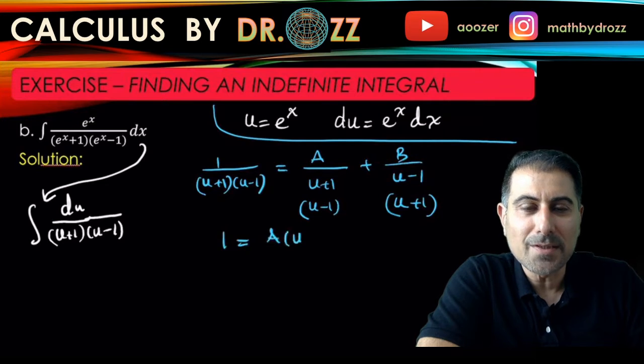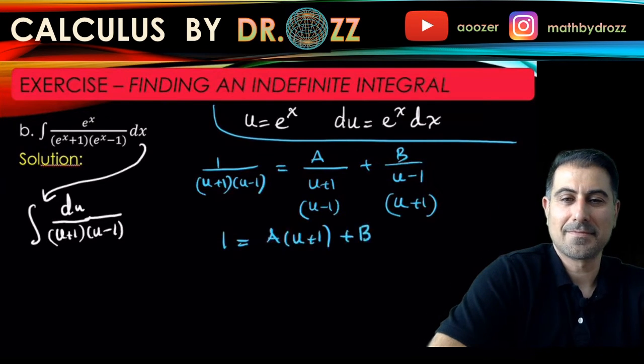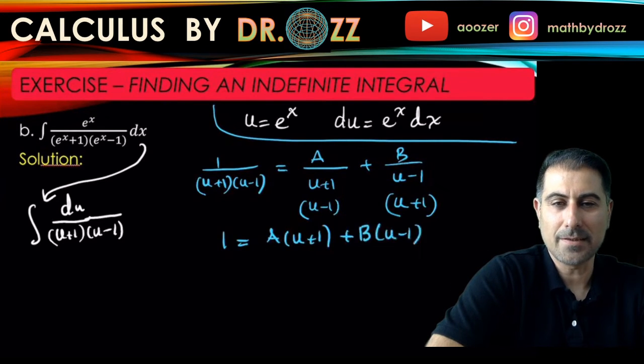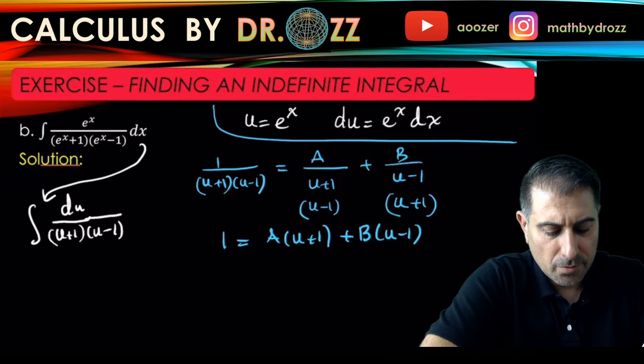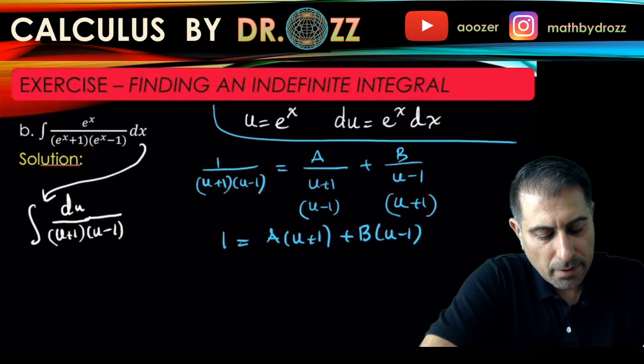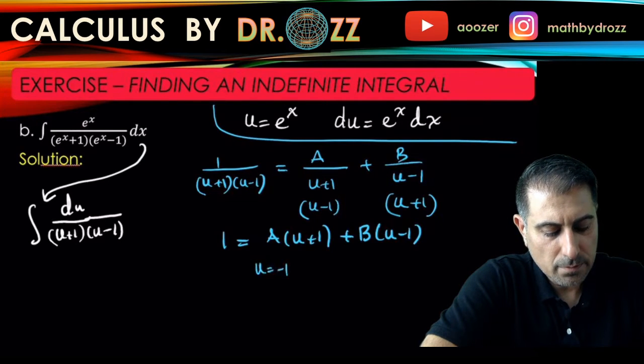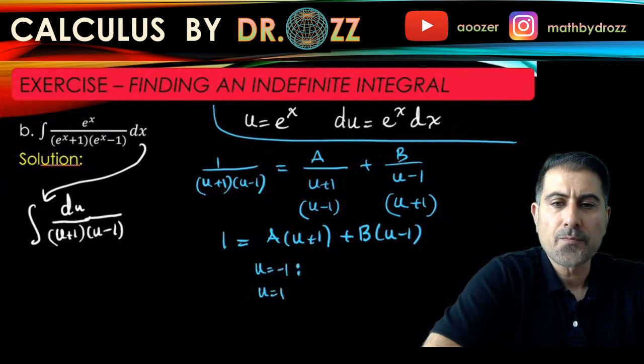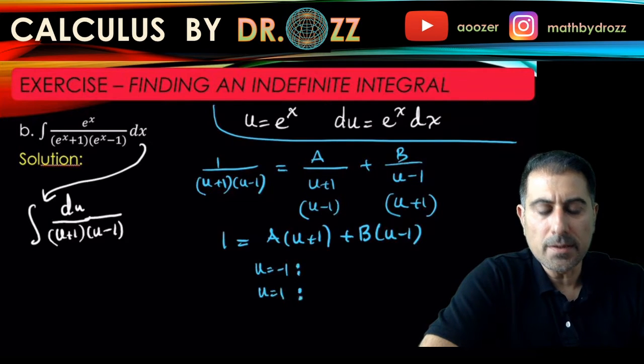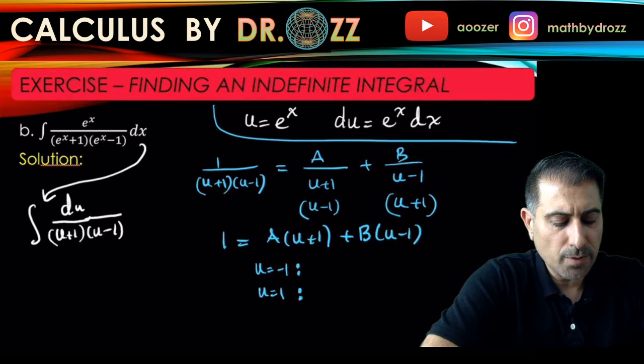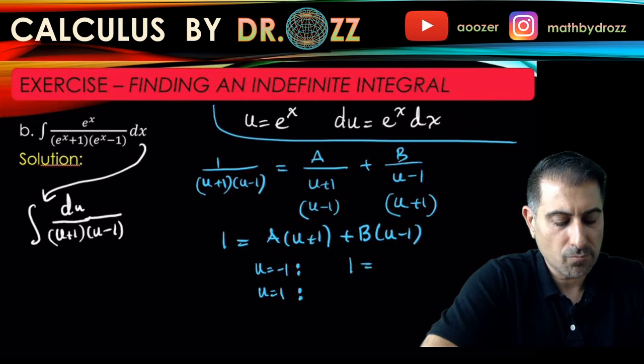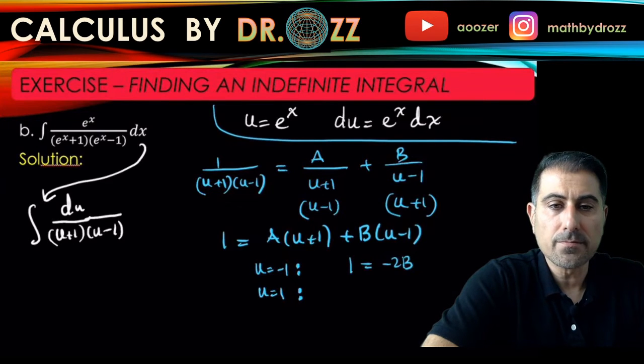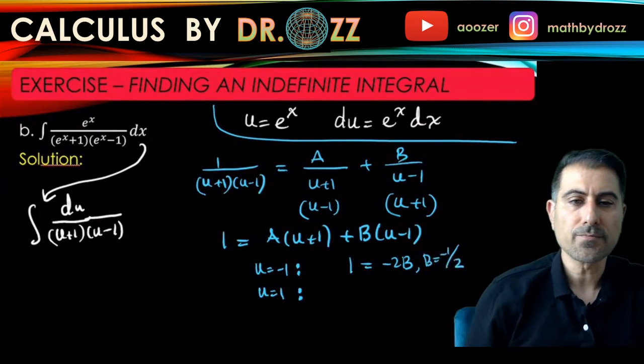This is going to be written as A times (u+1) plus B(u-1). So let's pick a few sample u values: u equals negative 1 and u equals 1. If u equals negative 1, the first term is gone on the right, so 1 equals negative 2B, so B equals negative 1/2.